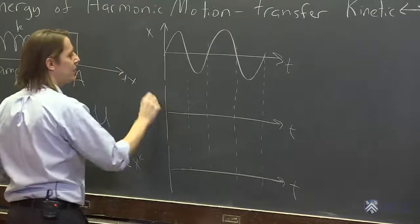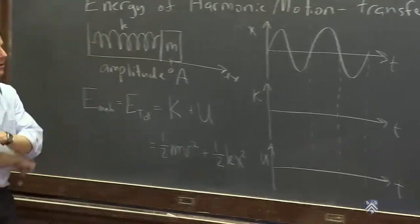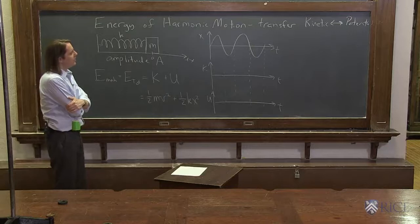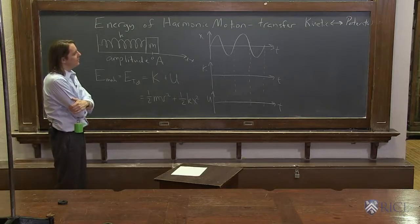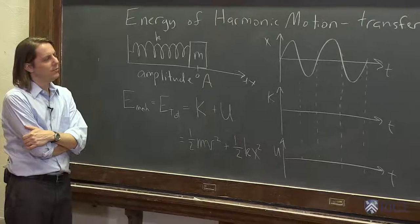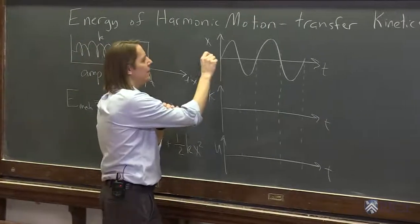Let's plot K and U. Kinetic energy is one half mv squared, where v is the speed. It doesn't matter which way it's going. Where do we have the biggest velocity? We have the biggest velocity when it crosses the axis.